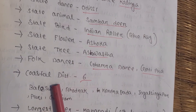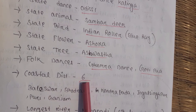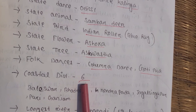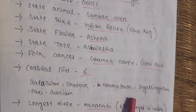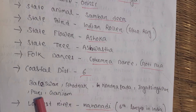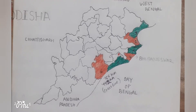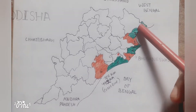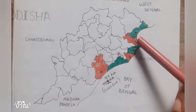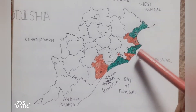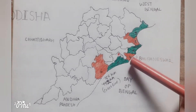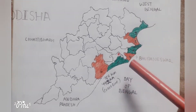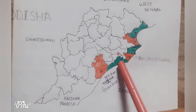There are six coastal districts of Odisha. These are Balasore, Bhadrak, Kendrapara, Jagatsinghpur, Puri, and Ganjam. Viewing them on the map from north to south: Balasore, Bhadrak, Kendrapara, Jagatsinghpur, Puri, and lastly Ganjam.